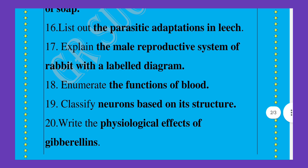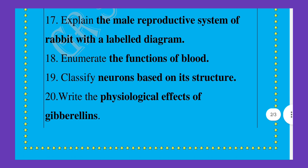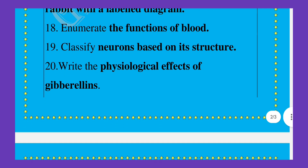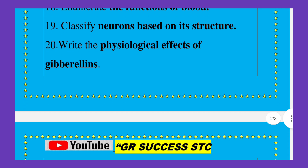Seventeenth one, explain the male reproductive system of a rabbit with a labelled diagram. Eighteenth one, enumerate the functions of blood. Nineteenth one, classify the neuron based on its structure. Twentieth one, write the physiological effects of Gibberellin.